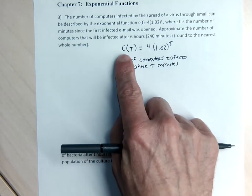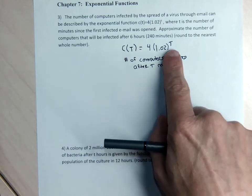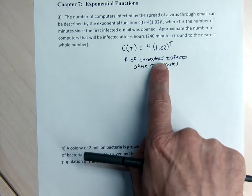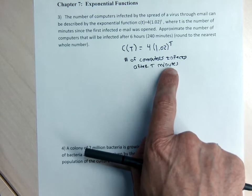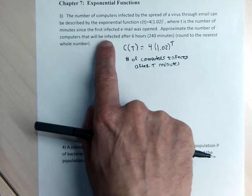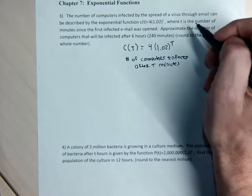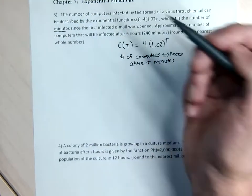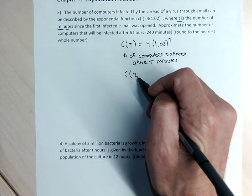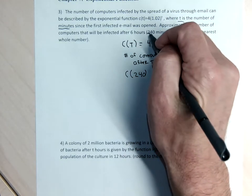On the right-hand side, there's only one variable — the letter T. Since it stands for the number of minutes, if I'm going to answer a question about the number of computers infected, the number I have to put in is the number of minutes, not the number of hours. The question asks to approximate the number of computers infected after six hours, which I noted as 240 minutes — but wait, that's not right.